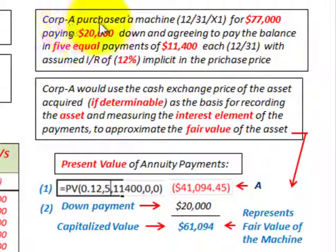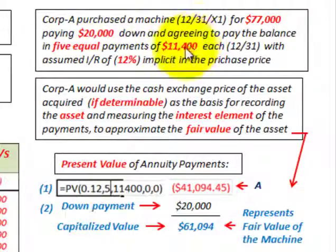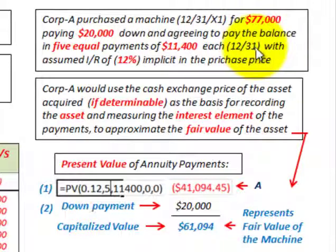In our example, Corporation A purchased a machine on 12/31/X1 for seventy-seven thousand dollars. They're paying twenty thousand dollars down and agreeing to pay the balance in five equal payments of eleven thousand four hundred dollars each at the end of each year, with an assumed interest rate of twelve percent, which is implicit in the purchase price.